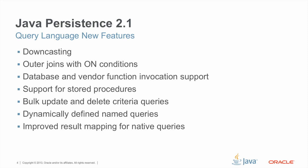We've added support for bulk update and delete criteria queries. In JPA 2.0, we had bulk update and delete queries within the Java persistence query language, the SQL-like query language for JPA. We've tried very hard to align the functionality of the criteria API and the Java persistence query language, and this was something brought in to make that alignment more rigorous. We've also added support for dynamically defined named queries, so you can define a named query at runtime and then register it by name with the persistence unit for later use. We've also improved the result mapping support for native queries, in particular for constructor results and better configuration for embeddable results.